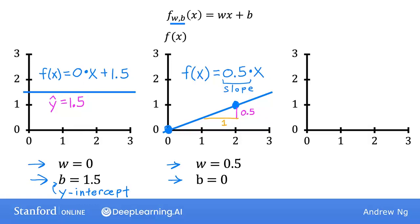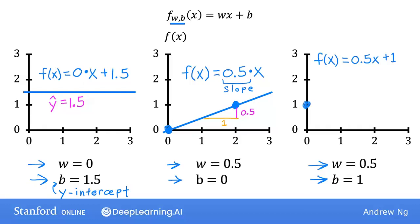And finally, if w equals 0.5 and b equals 1, then f of x is 0.5 times x plus 1. When x is 0, then f of x equals b, which is 1, so the line intersects the vertical axis at b, the y-intercept. Also, when x is 2, then f of x is 2. So the line looks like this. Again, the slope is 0.5 divided by 1, so the value of w gives you the slope, which is 0.5.